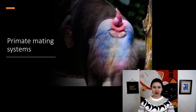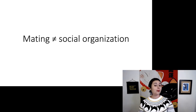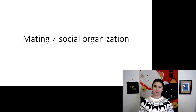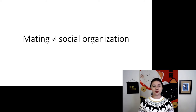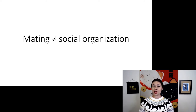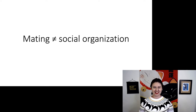When we want to talk about primate mating systems, the first thing to remember is that mating is different than social organization. We might see the entire group act in one way, but how mating actually happens might happen in another. For this lecture, we are specifically talking about mating structure.